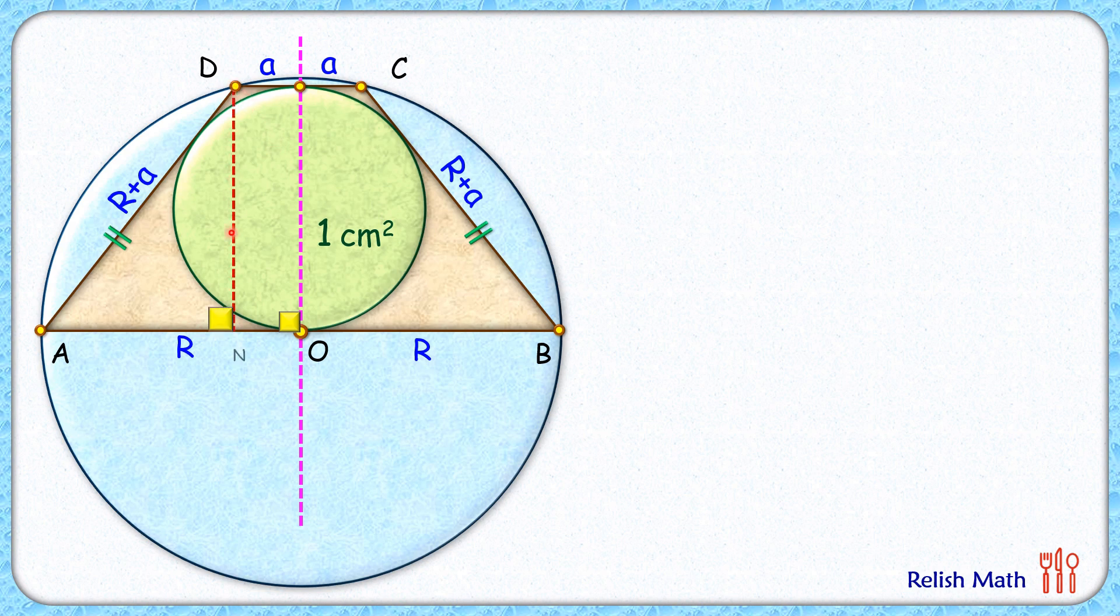Now from point D let's drop a perpendicular on AB. Now this length DN will be same as the diameter of this green circle. So if we'll assume the radius of this green circle as x centimeter, so DN length that will be 2x.